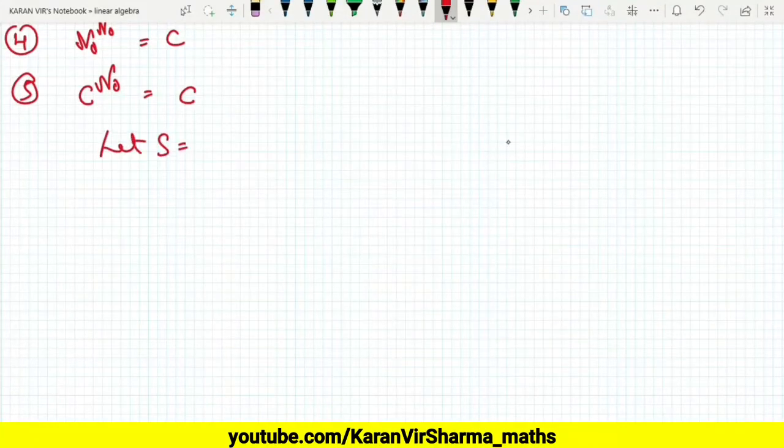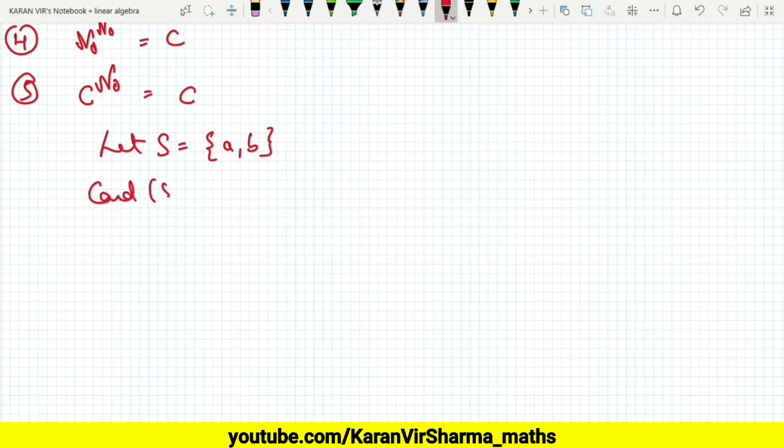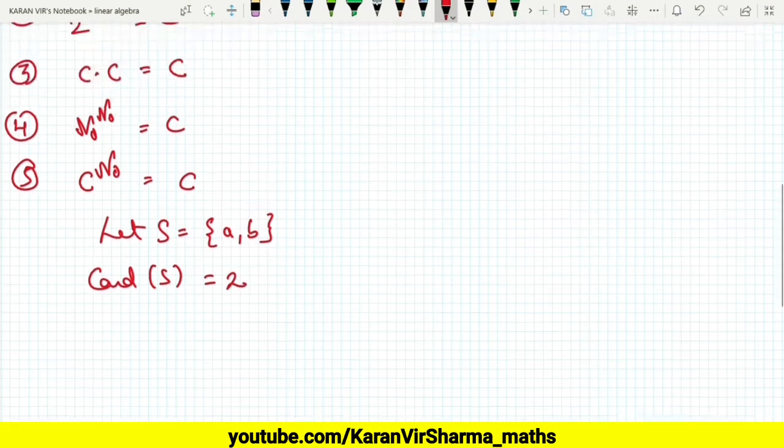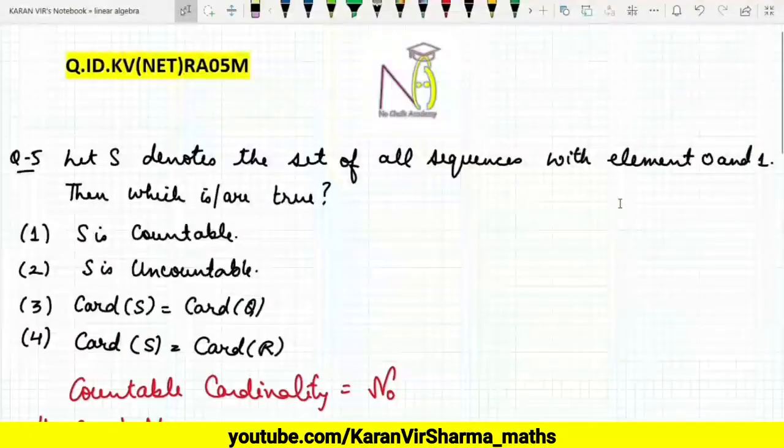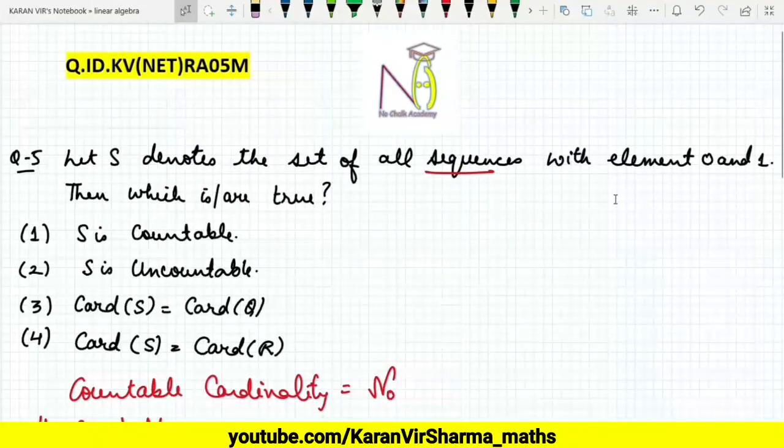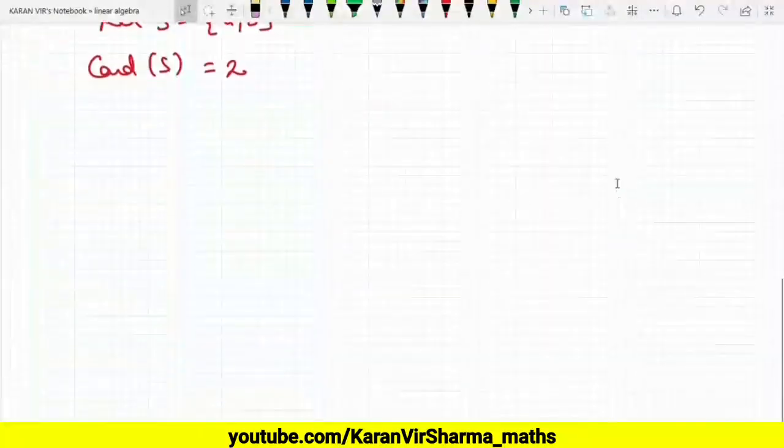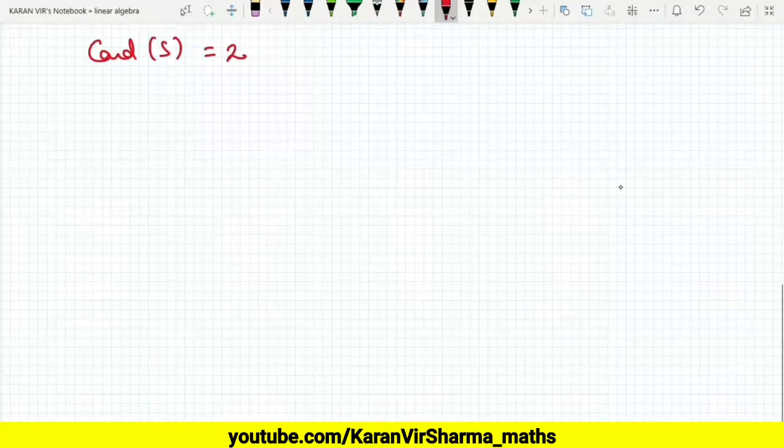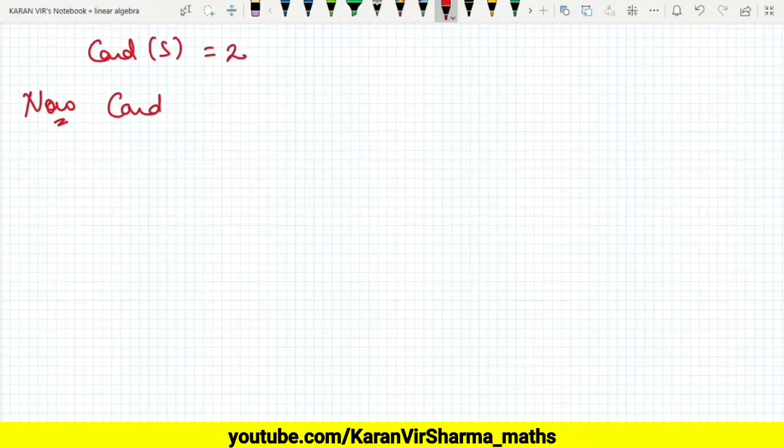Which contains two elements, let it be a and b. Clearly the cardinality of S is 2. But what we are interested to find out is the set of all sequences. Now what I want to know is the cardinality of that set S.